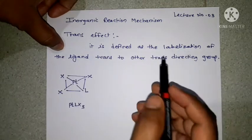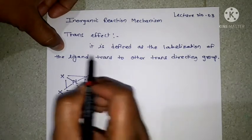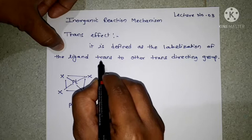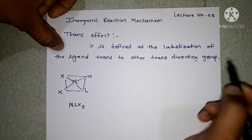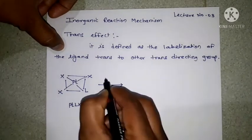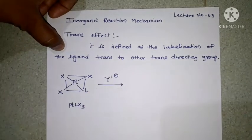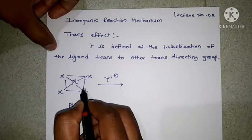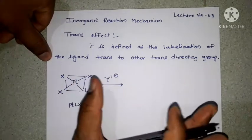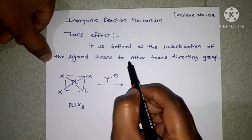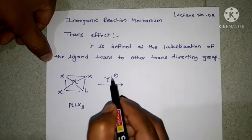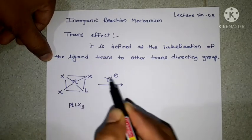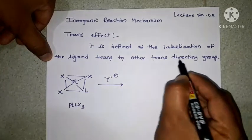The labilization of ligand means replacement of one ligand by another, and this replacement takes place trans to other trans directing group. When we have to introduce a different ligand Y minus, then Y is replaced by any one type of ligand trans to other trans directing group.